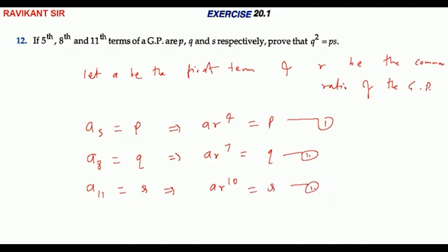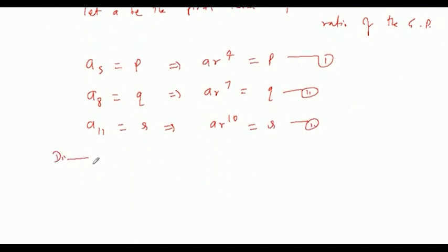Dividing the eighth term by the fifth term: A R to the power 7 over A R to the power 4 equals Q over P, which gives R cubed equals Q by P.